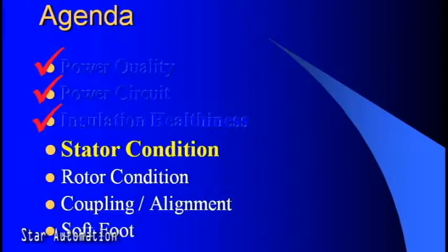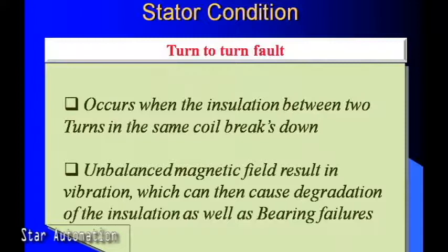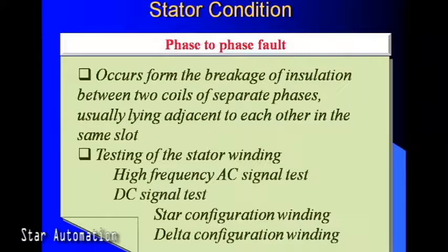Next we will discuss motor stator conditions. A turn-to-turn fault in the stator winding occurs from breakage of insulation between two coils of separate phases, usually lying adjacent to each other in the same slot. The following testing of the stator winding should be performed: high-frequency AC signal test, DC signal test, star configuration winding, and delta configuration winding.